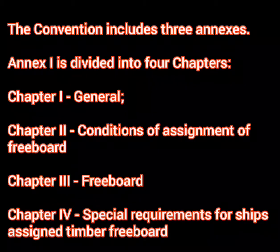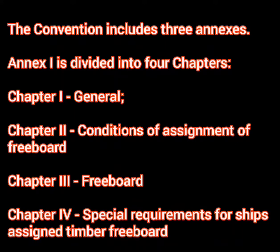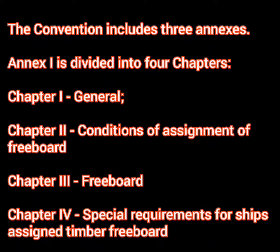This particular convention has 3 annexes and Annex 1 is divided into 4 chapters. Think of it like this: 3 A's and 4 C's — 3 areas and 4 conditions. In the load line convention, the 3 areas are Summer, Winter and Tropical. These are the big 3 areas into which the whole world is divided. The 4th condition is Winter North Atlantic, which is an added condition to the load line marks. So 3 annexes and 4 chapters to the first annex.